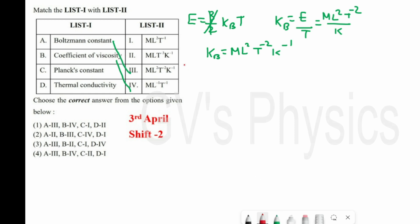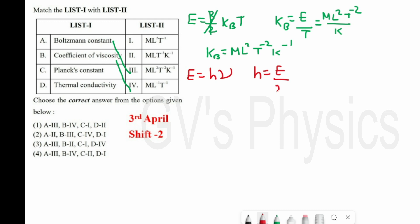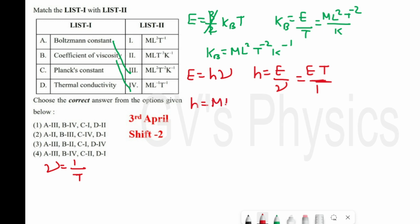Next one is Planck's constant. Using E = hν, we get h = E/ν. Since frequency ν = 1/T, h = E × T = ML²T⁻² × T = ML²T⁻¹. So C matches with 1.